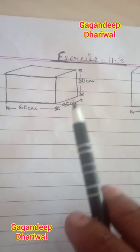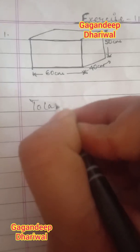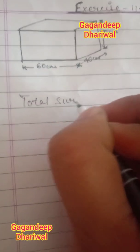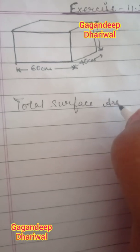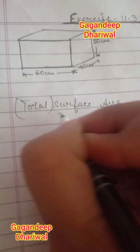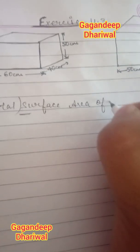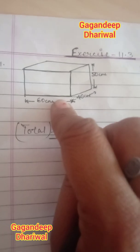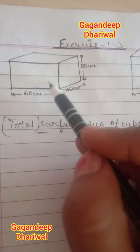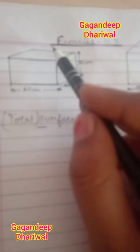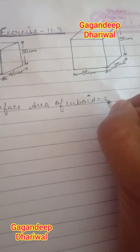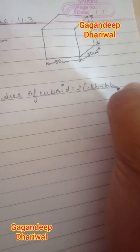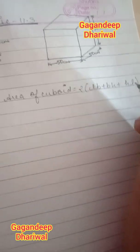We have two boxes: one is a cuboid and the other is a cube, and their dimensions are given. First, we find the surface area of the cuboid. The surface area of a cuboid accounts for six faces, each in the shape of a rectangle. The formula is: 2 times (length × breadth + breadth × height + height × length).